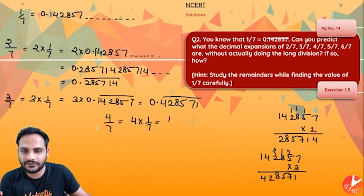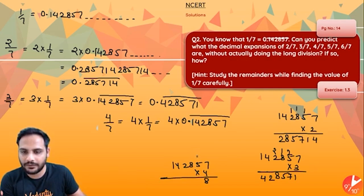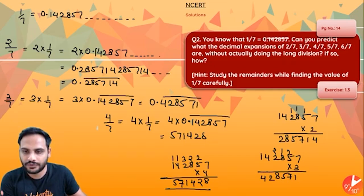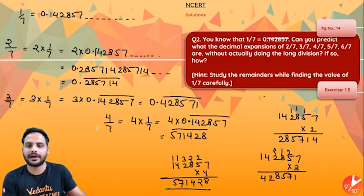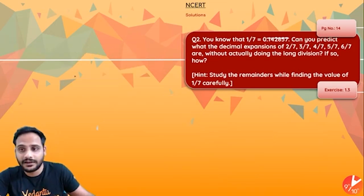Similarly, 4/7 = 4 × 0.142857 repeating. Multiplying 142857 by 4: 4×7=28, carry 2; 4×5=20+2=22, carry 2; 4×8=32+2=34, carry 3; 4×2=8+3=11, carry 1; 4×4=16+1=17, carry 1; 4×1=4+1=5. So 4/7 = 0.571428 bar.